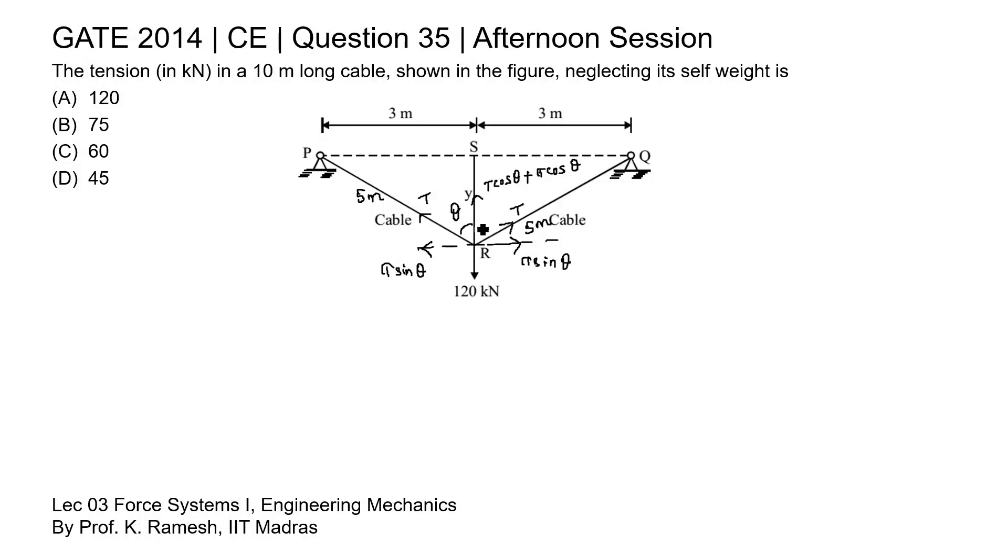If we see in the vertical direction we can write the summation of all the forces in vertical direction is 0 for equilibrium condition. Suppose if we take upward as positive and downward as negative, then we can write here for this vertical direction: T cos theta plus T cos theta, that is 2 T cos theta which is upward side.